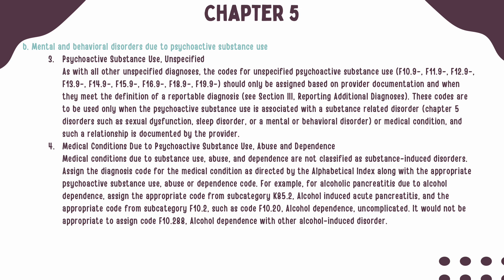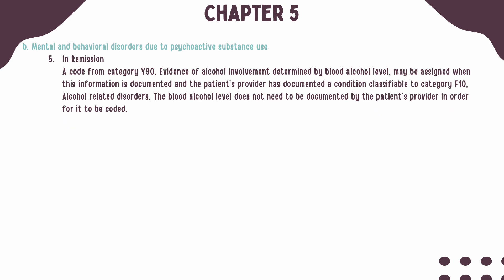As the example shows, alcoholic pancreatitis due to alcohol dependence has two codes: K85.2 for the alcohol-induced acute pancreatitis, as well as F10.20 for alcohol dependence uncomplicated. When a blood alcohol level is recorded and the provider has documented a condition classifiable to Category F10 for alcohol-related disorders, a code from Category Y90 can be assigned to represent the blood alcohol level.